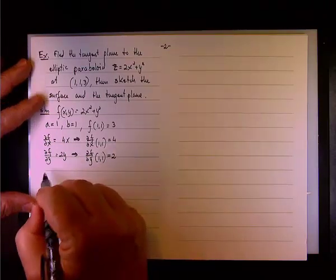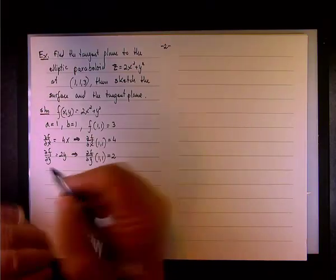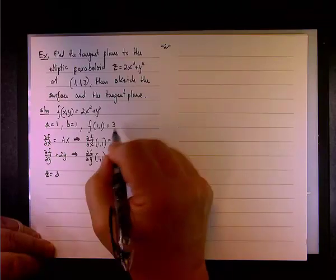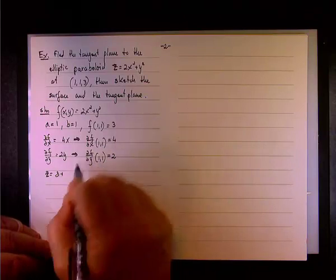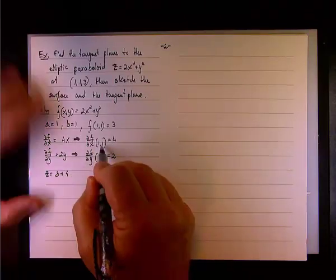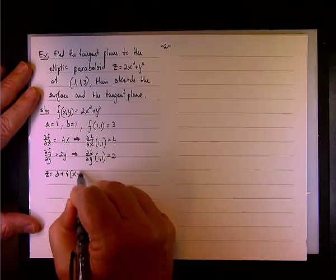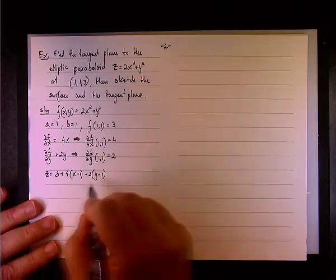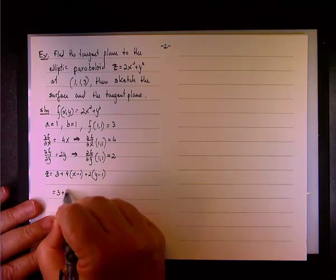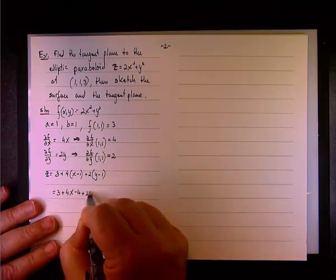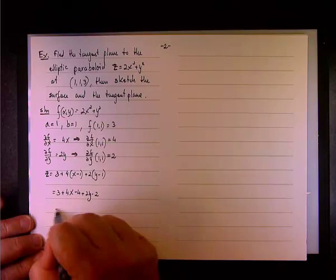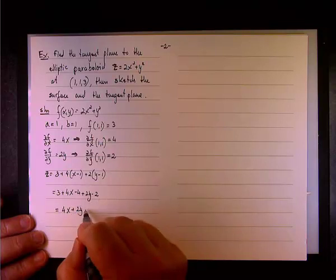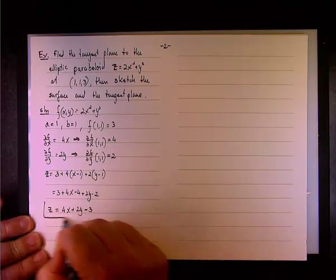So, we're going to say that the plane is z equals 3, plus the partial derivative, the 1, 1 is 4 times x minus 1 plus 2 times y minus 1. And once we clear the parentheses and work it out, then we'll have 3 plus 4x minus 4 plus 2y minus 2, or simply 4x plus 2y. We have 3, negative 1, negative 2, so it's total negative 3.